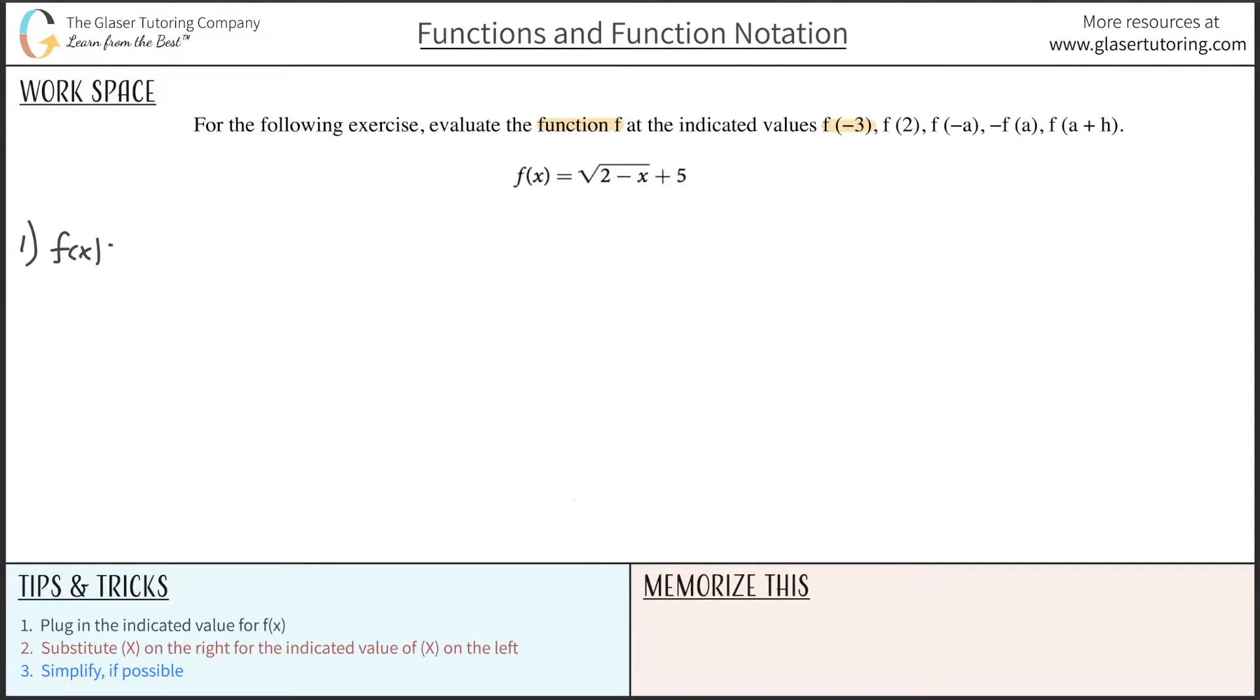I'm going to rewrite the original function. f of x is equal to radical 2 minus x plus 5. So now where they want us to evaluate it is f of negative 3. So I substitute that in for my f of x, and now anywhere on the right-hand side I have an x, I'm going to plug in the value of negative 3. So this is 2 minus negative 3 plus 5. That's it.